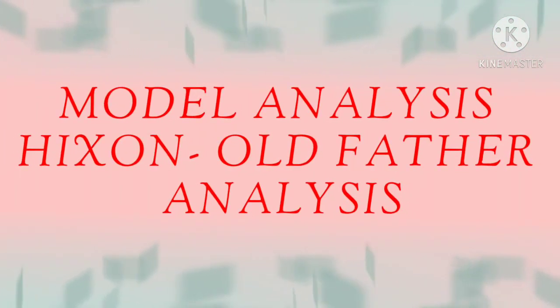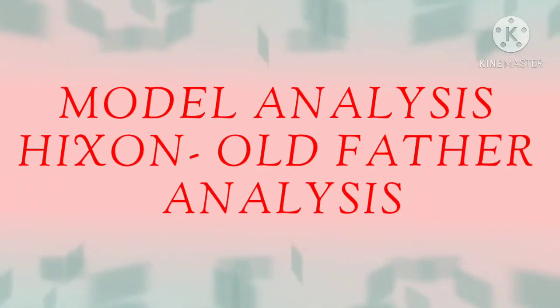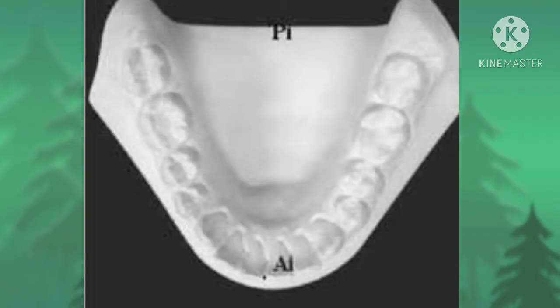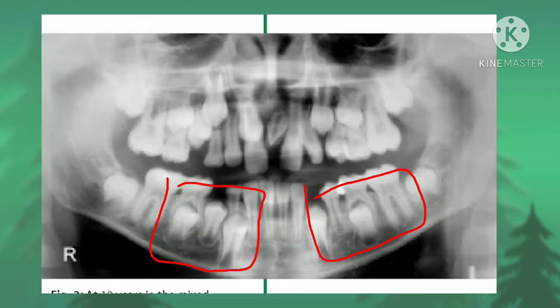Hello everyone. Today we are going to learn about Higson and Oldfather analysis. The size of the mandibular incisors is measured from the cast, and the size of the mandibular premolars is measured from the radiograph.